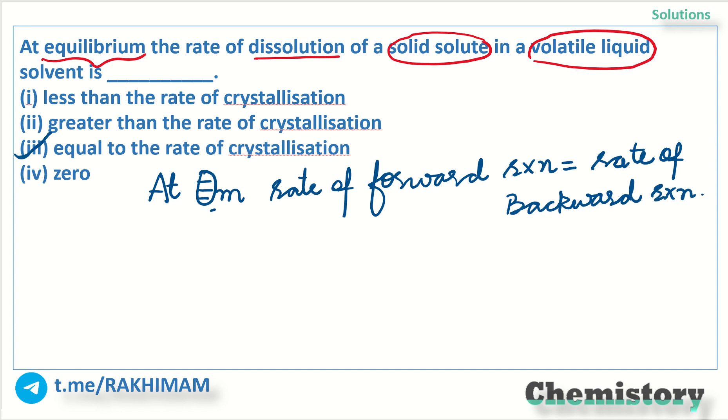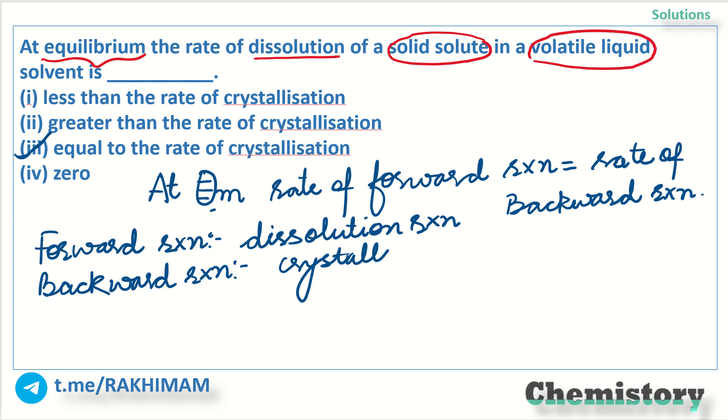So the concentration of reactant is also equal to the concentration of product at equilibrium. And we will consider that the forward reaction is dissolution reaction. Let us consider that the forward reaction is dissolution reaction and the backward reaction is crystallization reaction.